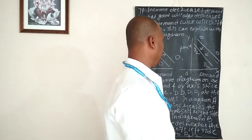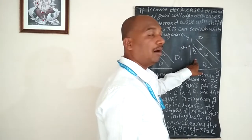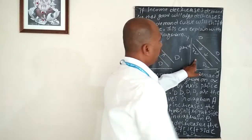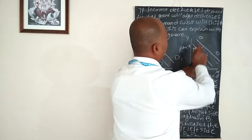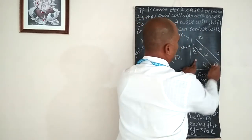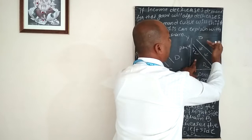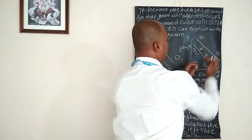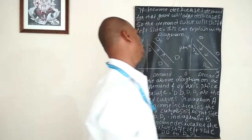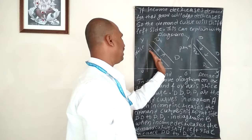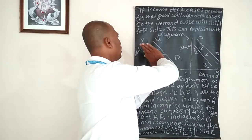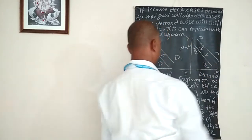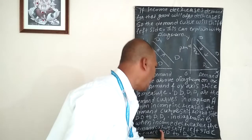In Diagram B: when the income of the consumer decreases, the demand curve shifts from right to left. The demand curve D shifts from right to left, creating D2. Income increases — demand curve shifts left to right; income decreases — demand curve shifts right to left, as clearly written on the board.